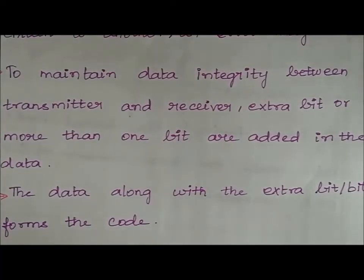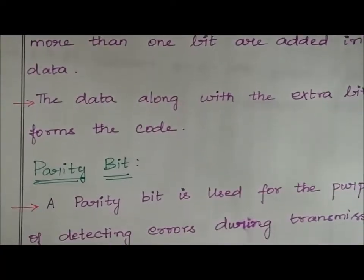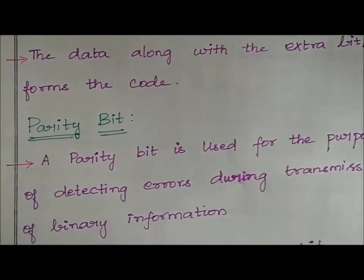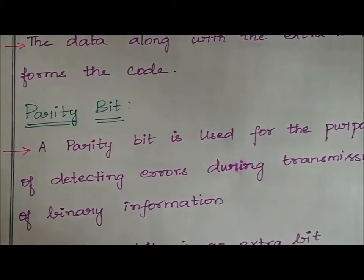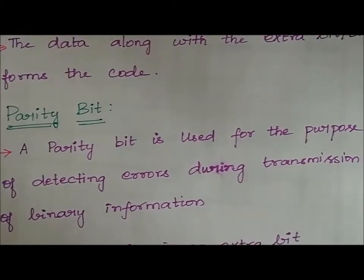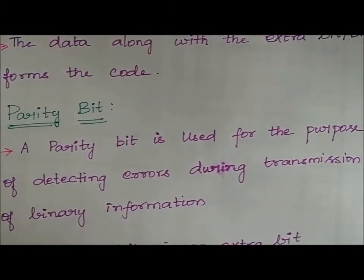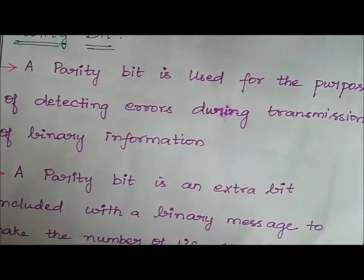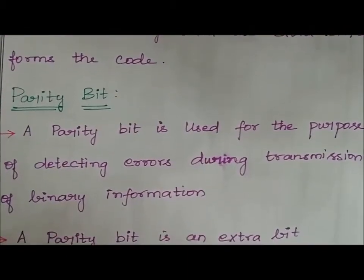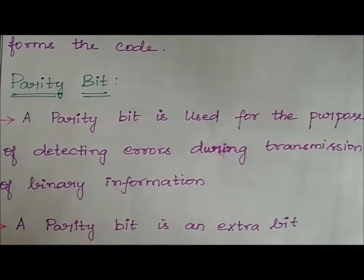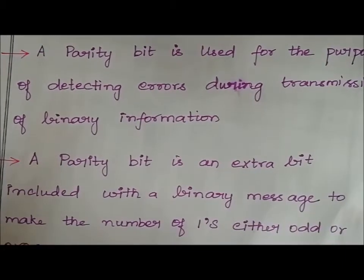In error detection and correction, there are two different types: parity bit and Hamming code. Parity bit is used for the purpose of detecting errors during transmission of binary information.